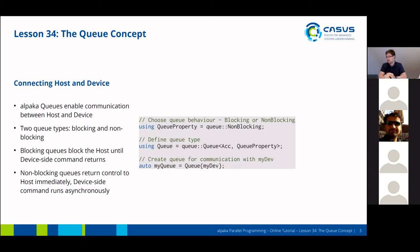You'll define your queue type using the accelerator and the queue property as template parameters, and then you'll instantiate and construct an actual queue, which is then tied to a specific device.